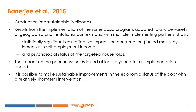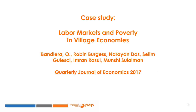The impact on the poor lasted at least a year after all implementations ended, and it is possible to make sustainable improvements in the economic status of the poor with relatively short-term interventions that transfer assets, skills, and literacy. However, these evaluations from six countries, while interesting, still refer to relatively short runs. We addressed whether households can escape poverty through an intervention adapted to six different countries with different implementation partners.